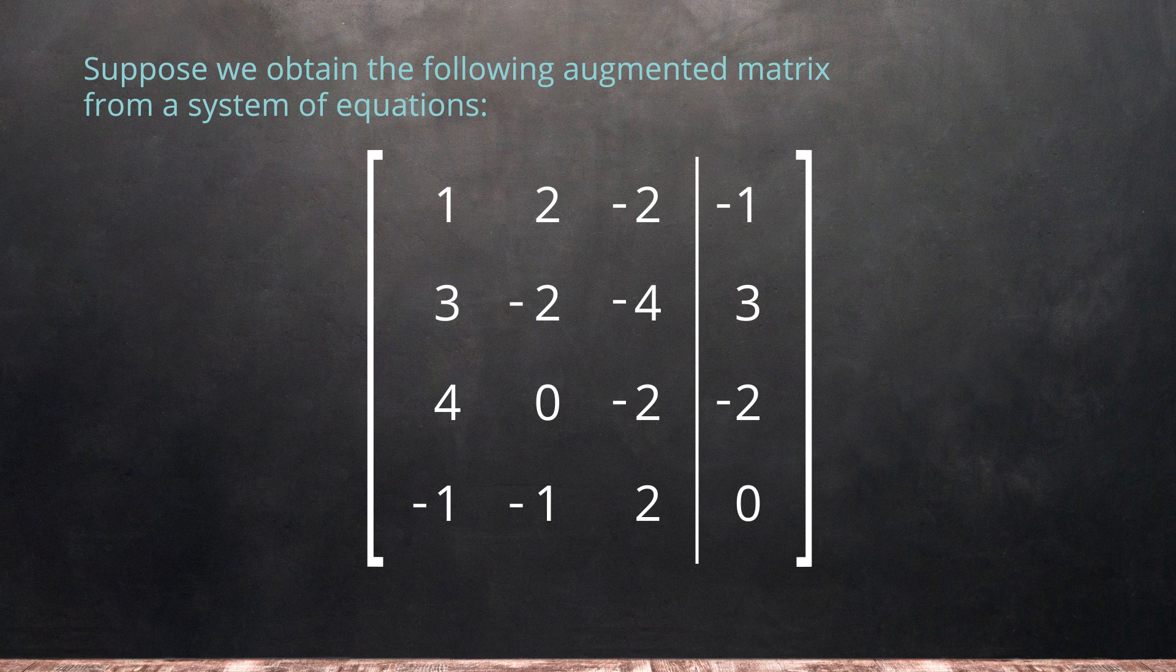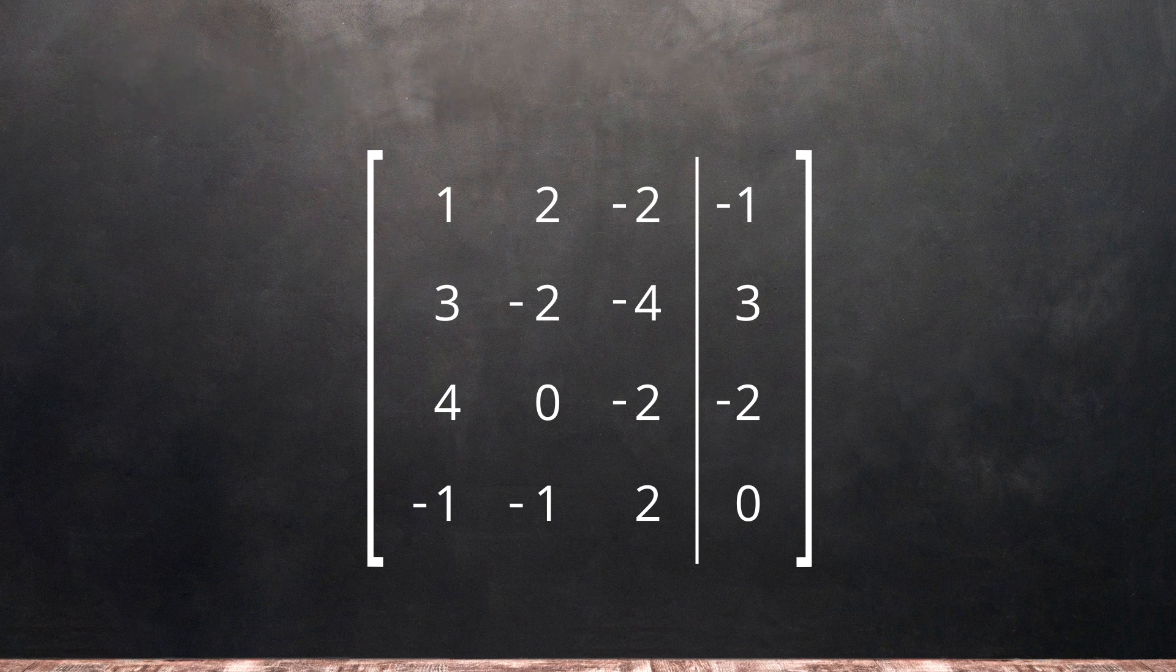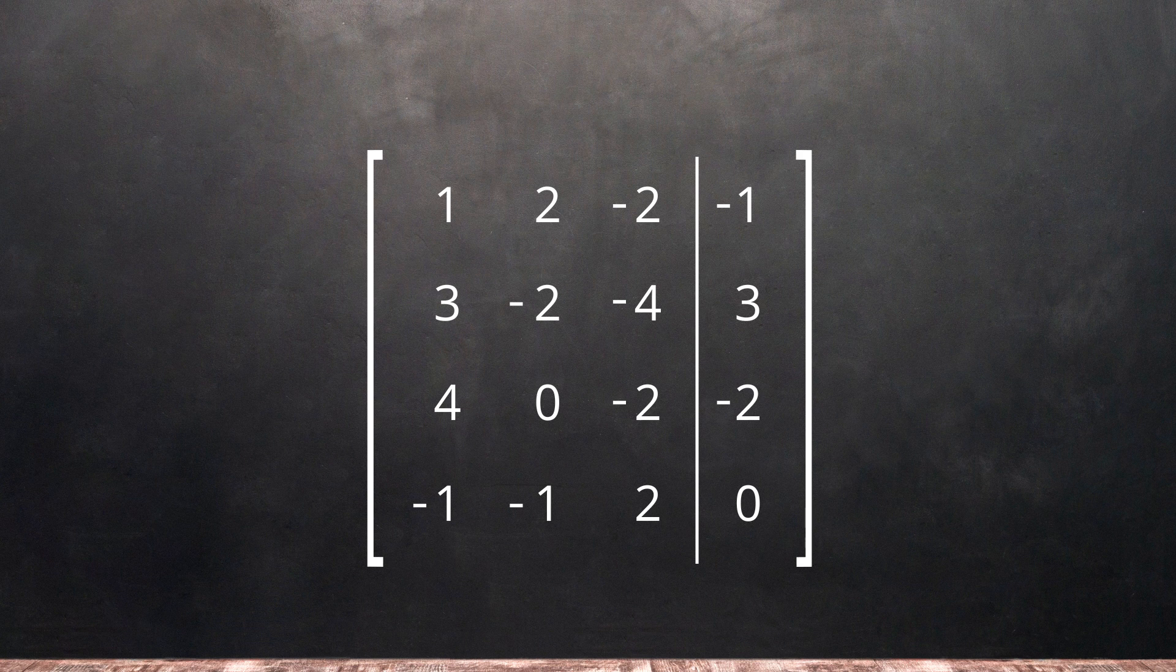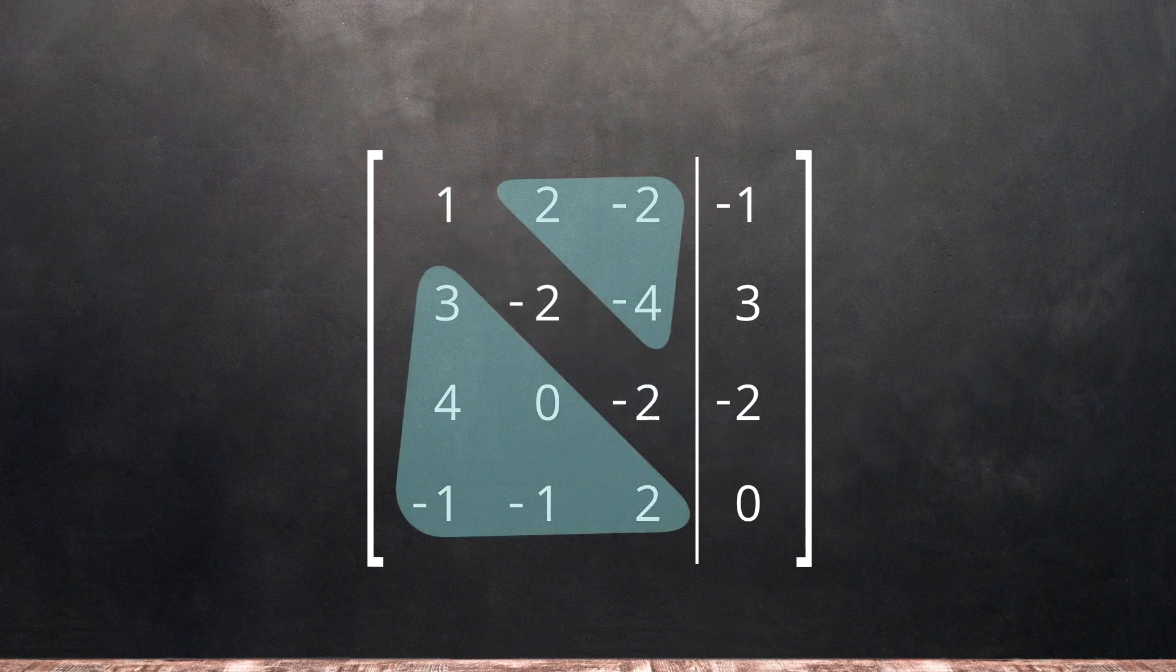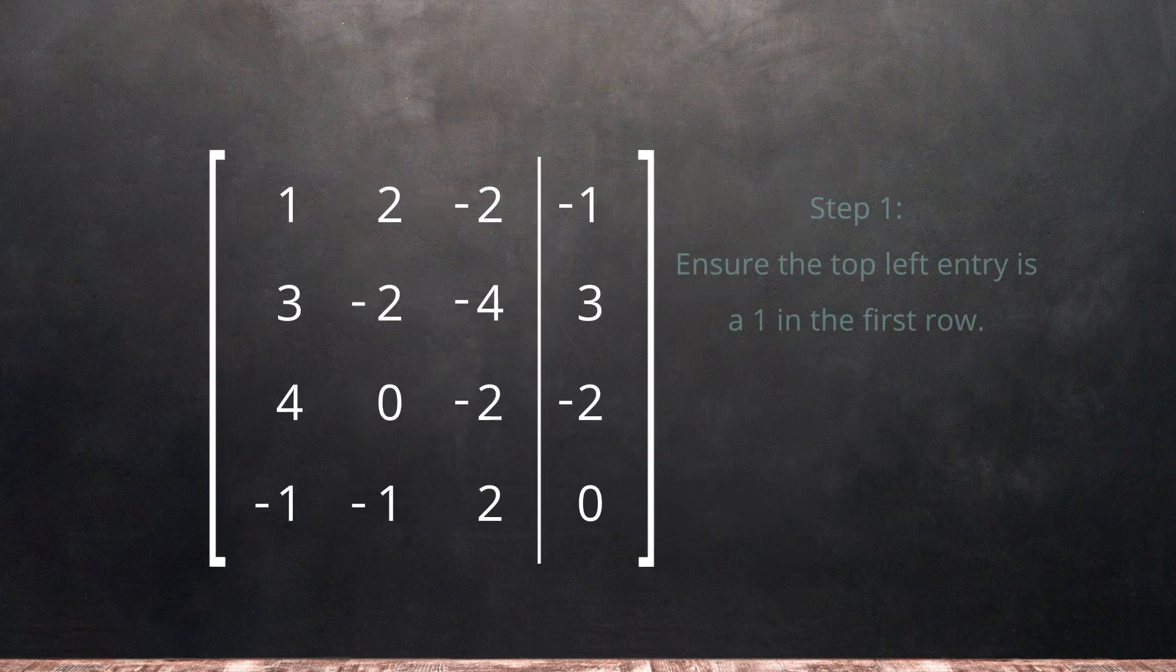Suppose we obtain the following augmented matrix from a system of equations. Our goal is to perform row operations until the matrix on the left-hand side contains 1s along the diagonal and 0s everywhere else. We're going to achieve this in the following order.